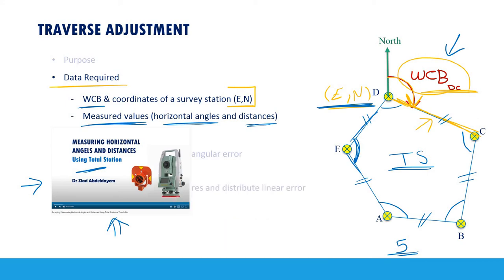Once you have all of this data ready, you can start the calculations. To summarize, the data required is: the easting and northing coordinates of one control station, the whole circle bearing of one side, the measured internal horizontal angles, and the distances between each two stations. Once you have these numbers, you can move to the traverse adjustment calculations.